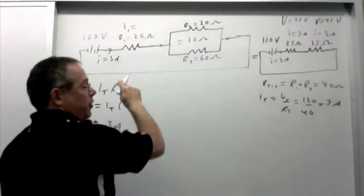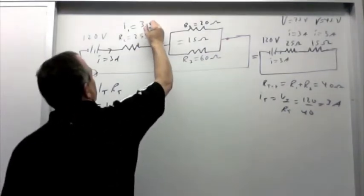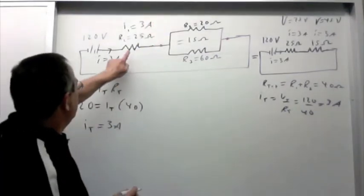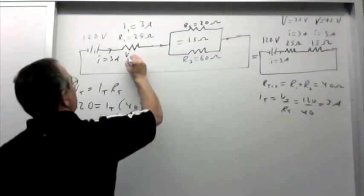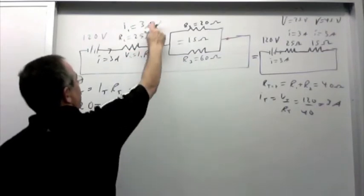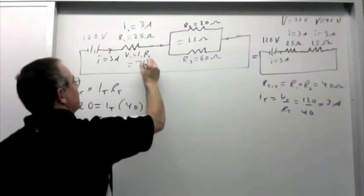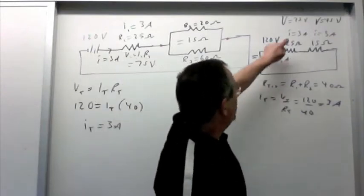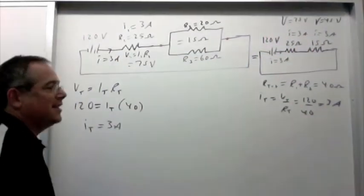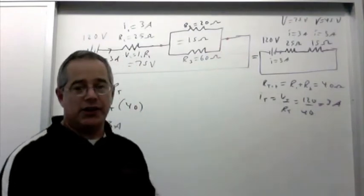So 3 amps goes through this circuit coming out of the battery. The current through the 25 ohm resistor is 3 amps. And therefore, the voltage of this resistor, V1 equals I1 R1, is 75 volts. Just like we said over here, 75 volts. So all that's the same. Now we have to worry about what's going on between the red dots.